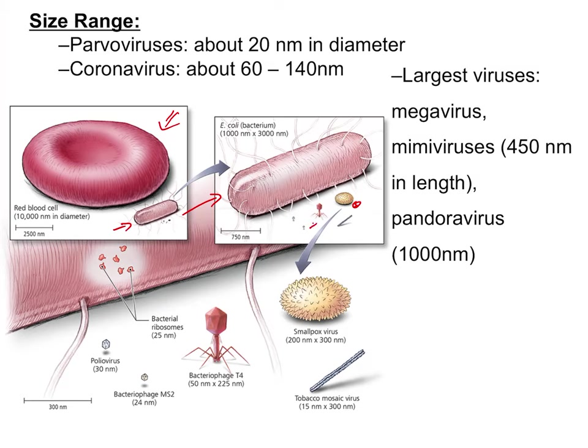Crossing the host species barrier is not very common, but we have seen it — for example, avian virus genes crossing into the swine virus gene pool and then infecting humans. I want you to go to the forum and discuss: what is the medical importance of the narrow host range of viruses? If the virus host range is very narrow, how is that important and useful to medicine?